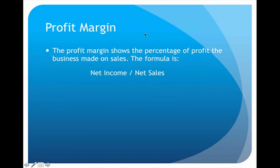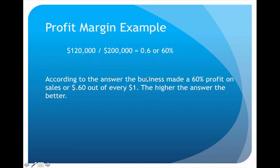The next formula is called the profit margin, which tells us how much profit we make on all the items that we sell. The formula is net income divided by net sales. If we had net income of $120,000 and net sales of $200,000, we get 0.6 or 60%. That means we made a 60% profit on sales — for every dollar that we sold, we got to keep sixty cents in profit. The higher that is, the better.